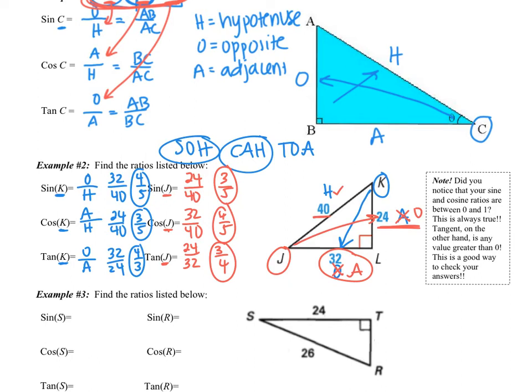So again, the process, my suggestion when you're doing these trig ratios. Write that SOHCAHTOA at the top. And then you'll need to label your O, A, and H on your figure, which is dependent on the angle that you're looking at.